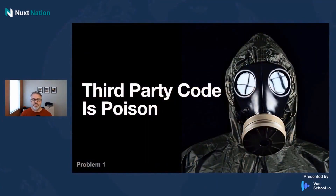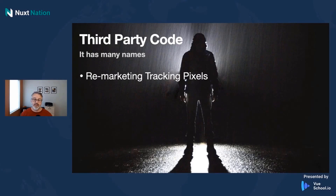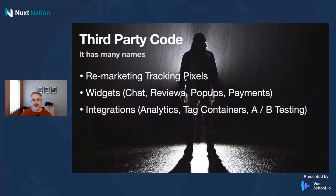Third party code is poison — let's figure out how we can solve that problem. But first, let's get to know third party code. It could be a lot of different things: remarketing tracking pixels, for example, if you view a product like a mud flap, a lot of people want to know what you're looking at so they can remarket to you on Facebook or other places. Likewise, it could be a widget on your website, such as a chat provider, maybe some pop-ups, reviews, or payments.